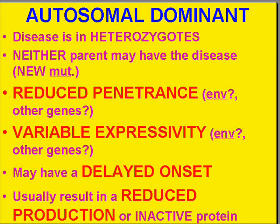In the first type of Mendelian inheritance pattern — the group of diseases we call autosomal dominant — there are several factors which make them relatively unique. If you're heterozygous for this disorder, you have the disease. Sometimes neither of your parents have the disease, but it's a new mutation that appears in your genes. The autosomal dominant group of diseases in general have a fairly reduced penetrance.